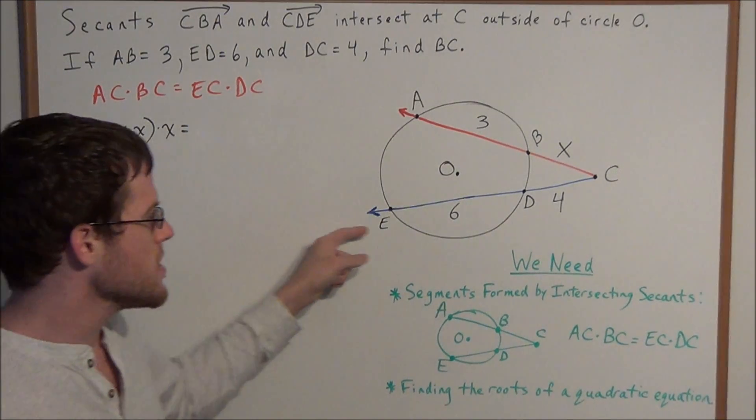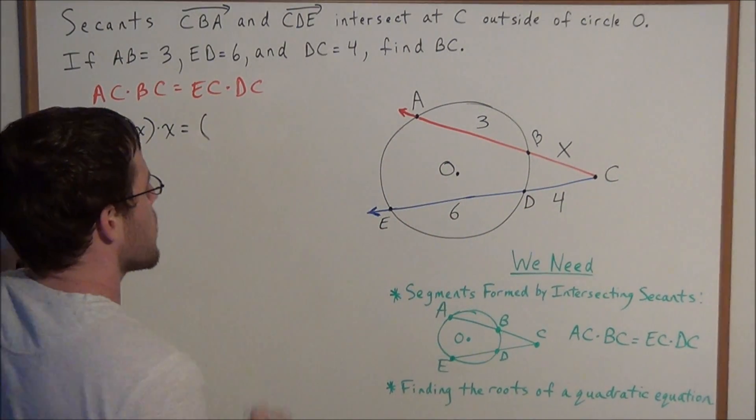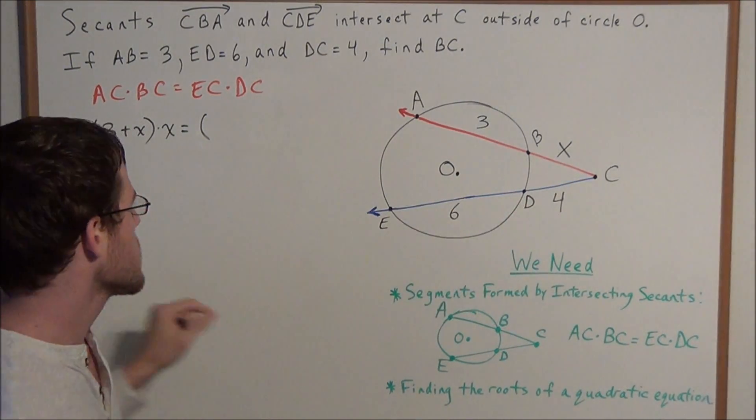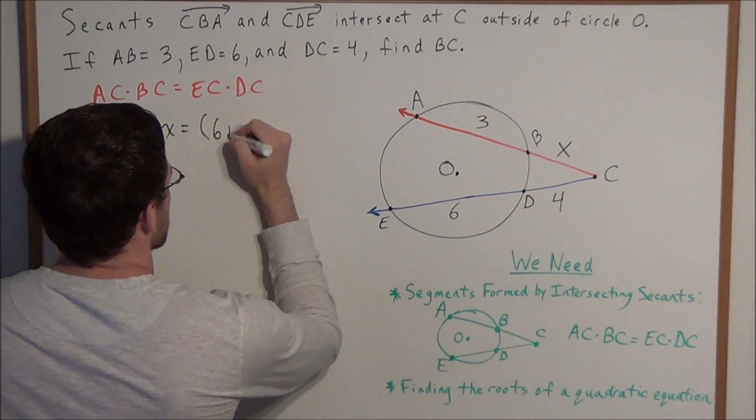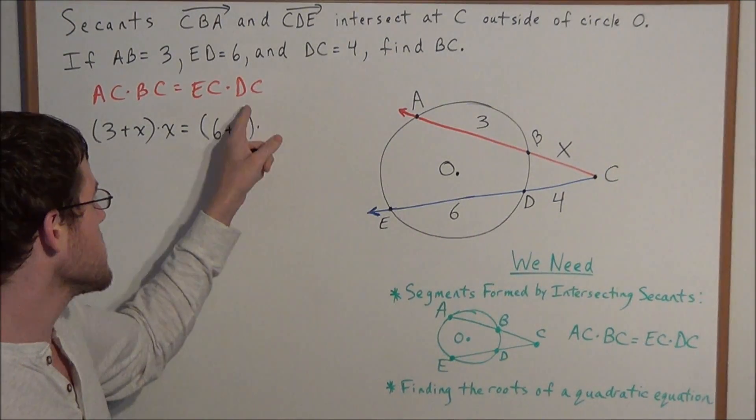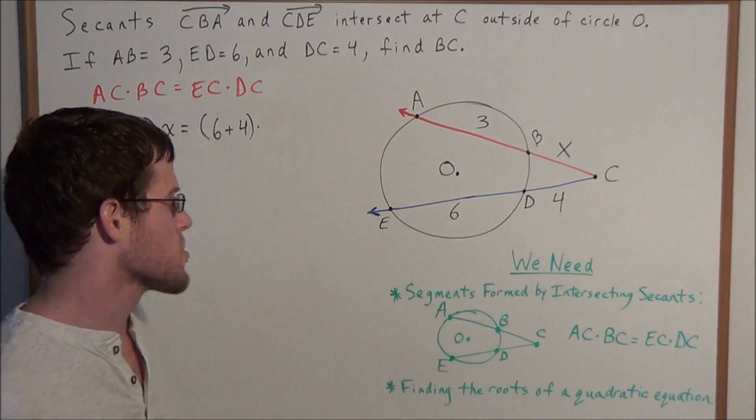and now the length of EC, the entire segment. Well, the length of ED is 6 and the length of DC is 4, so the entire segment would be 6 plus 4. And now we have times DC. The length of the outer segment is just 4.